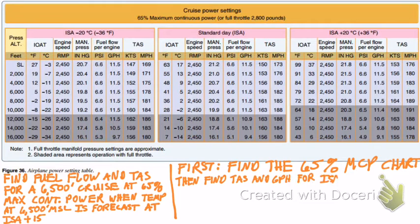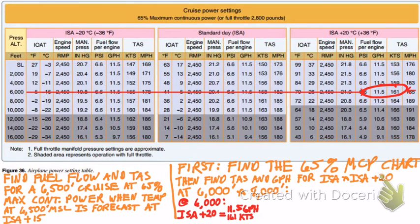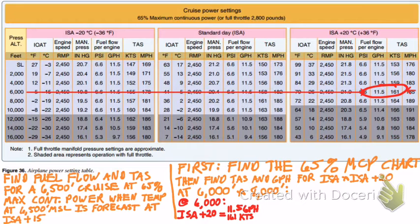We only have ISA minus 20, standard, and ISA plus 20 on the chart, and only 6,000 and 8,000 feet as pressure altitude columns. So we need to find true airspeed and gallons per hour for four combinations: ISA plus 20 at 6,000 feet — 11.5 GPH and 161 knots; standard at 6,000 feet — 11.5 GPH and 158 knots; ISA plus 20 at 8,000 feet — 11.5 GPH and 164 knots; and standard at 8,000 feet — 11.5 GPH and 161 knots.